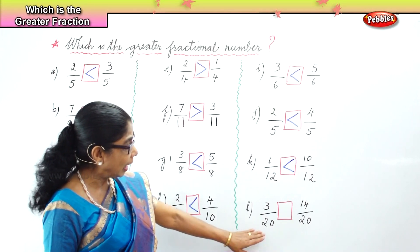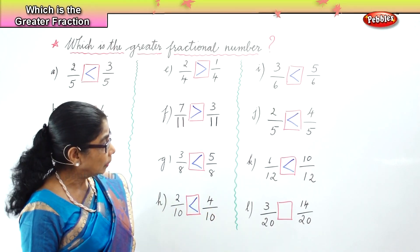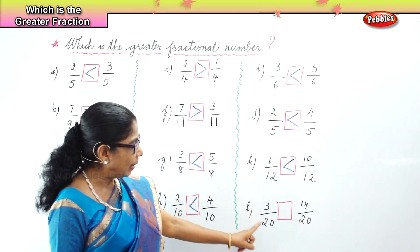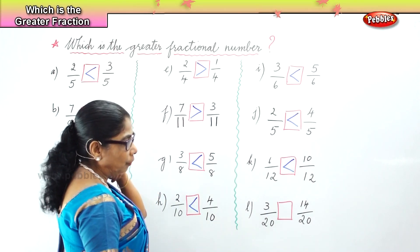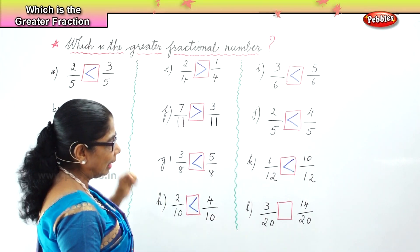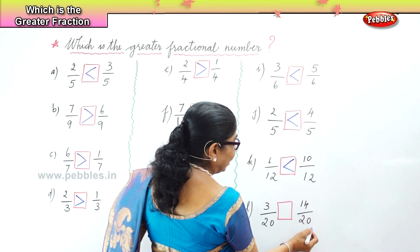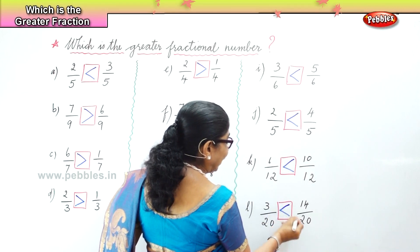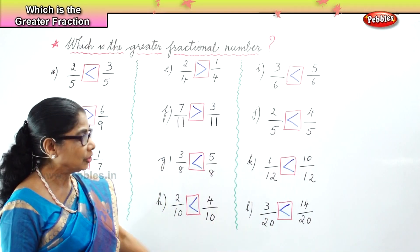And finally, in the last sum, the denominators are the same — twenty. The whole is divided into twenty parts. We have three by twenty and fourteen by twenty. Definitely, fourteen is bigger than three. Therefore, fourteen by twenty is greater than three by twenty.